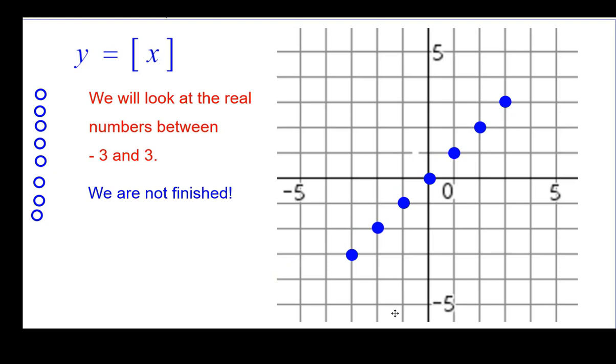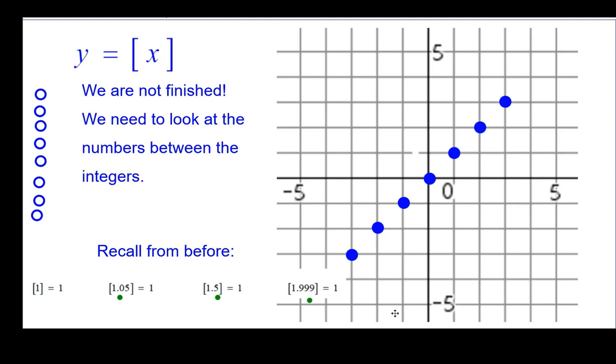Now, we're not finished. People think, oh, it's a line. Good, this was real easy. No, no, we haven't looked at the numbers between them. Those are different answers. So the numbers between the integers. Let's start with 1. We know 1 is 1. The greatest integer of 1.05 is 1. So let's go ahead and plot that one. That's over 1.05 and up 1. 1.5 is 1. So over 1.5, up 1. 1.999, almost 2, is 1. We'll plot that one.